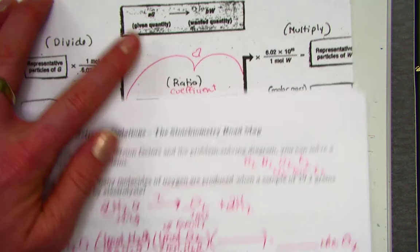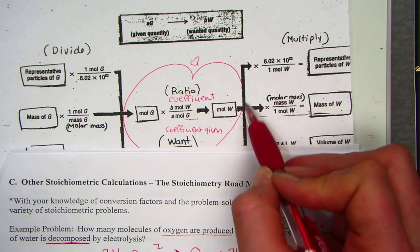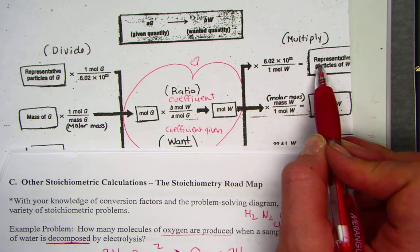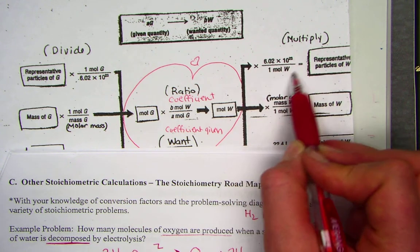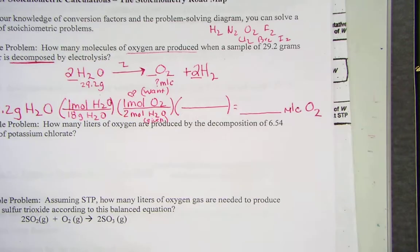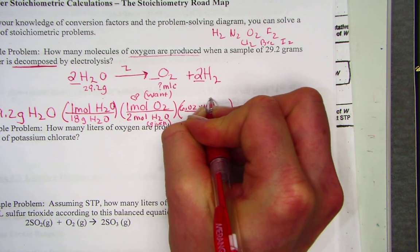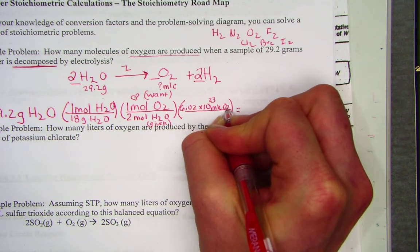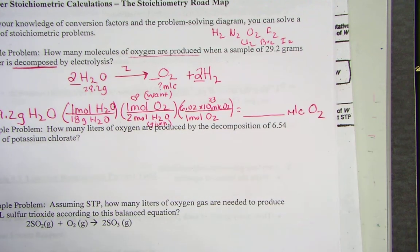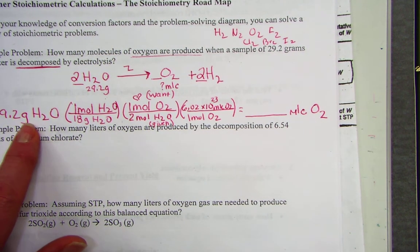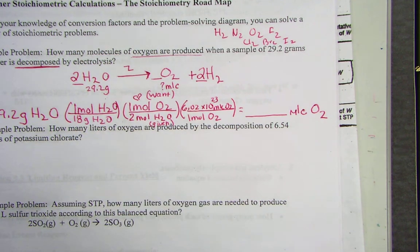The last thing we need to do is head north in our stoichiometry road map. We want to count. We want to count the individual particles. When we go from mole to particles, we trip over Avogadro's number. We see that there is 6.02 times 10 to the 23rd molecules of oxygen in every one mole of oxygen. Every number has a label and a unit every step, every time, to ensure full credit.